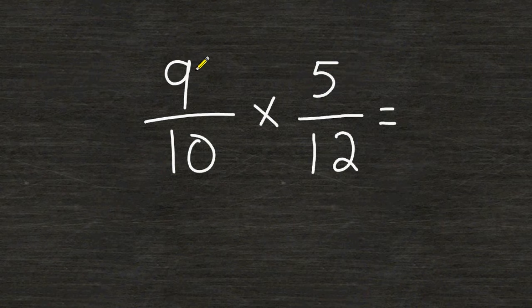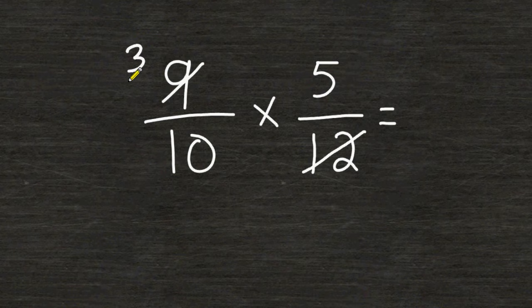What you do is you cross out each one of those numbers and then you change it to however many times the common factor fits inside each number. For example, 3 can be divided into 9 three times and 3 can be divided into 12 four times.